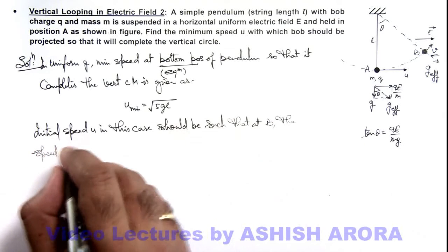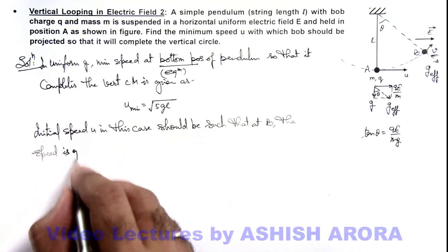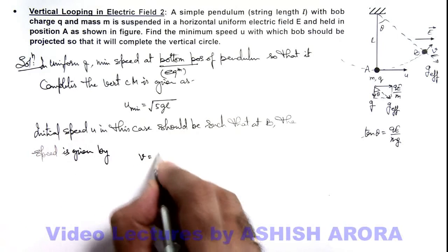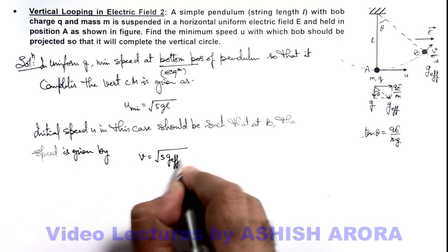The speed is given by v is equal to root of 5 g effective into l.